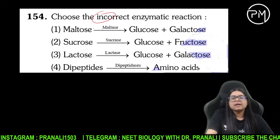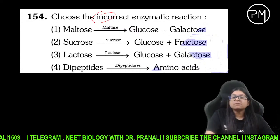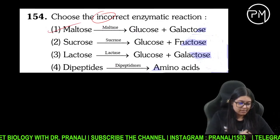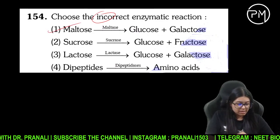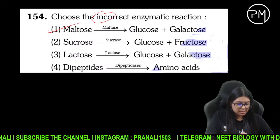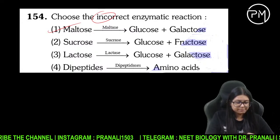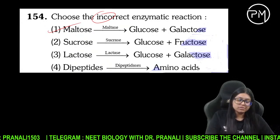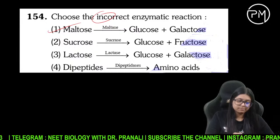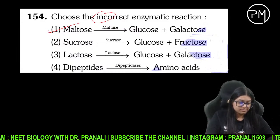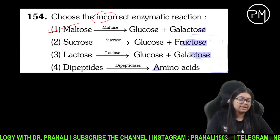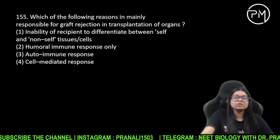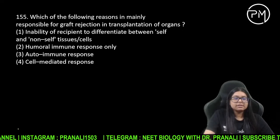Incorrect kya hai? Maltose kiska bana hai — do glucose ka bana hai. Maltose disaccharide hai. Maltose is made up of glucose plus glucose — alpha-1,4 glycosidic bond se linked hai. Toh yahan galactose nahi aayega.